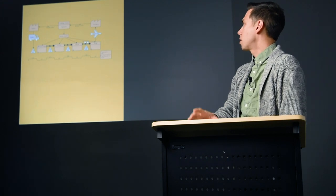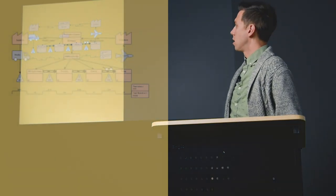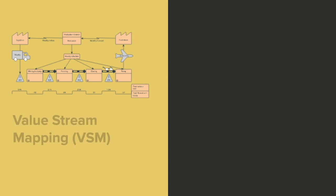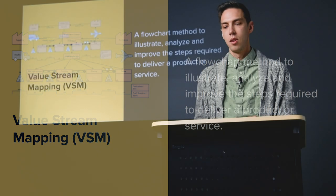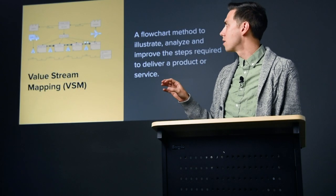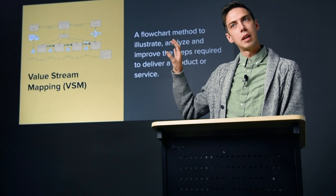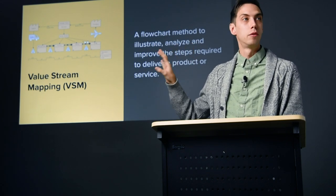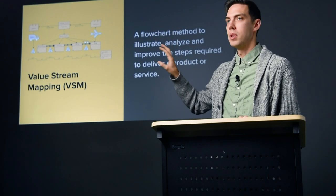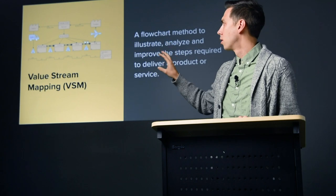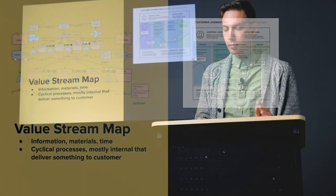A value stream map is a flowchart method to illustrate, analyze, and improve the steps required to deliver a product or service. It's an internal process — thinking about a factory floor, there are steps that have to be taken, and you're mapping out that whole process.